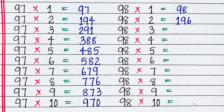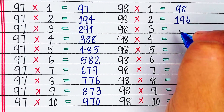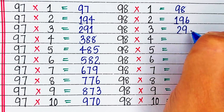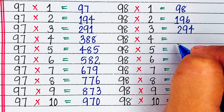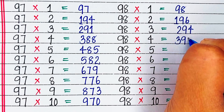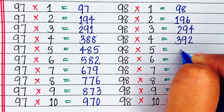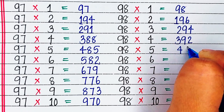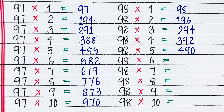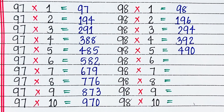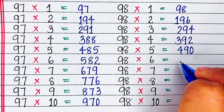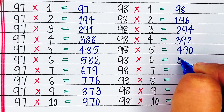Next is table of 98. 98 ones are 98. 98 twos are 196. 98 threes are 294. 98 fours are 392. 98 fives are 490. 98 sixes are 588.